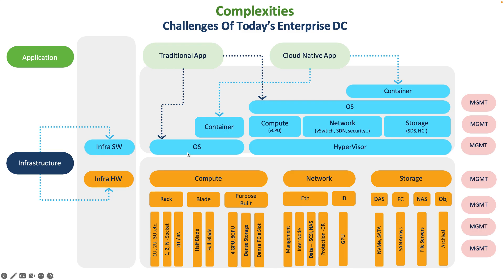Some applications are sitting on the operating system directly, some are containerized, containerized on hypervisors, and then there's the concept of hyper-distribution. Applications are not just sitting in one location — they're on-premise, private clouds, public clouds, and not only that but different private and public clouds. AWS may not have the functionality that GCP or Alibaba Cloud does, so that brings additional complexity.